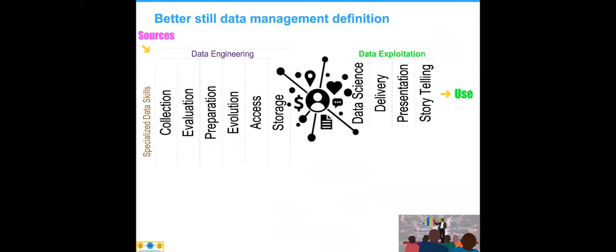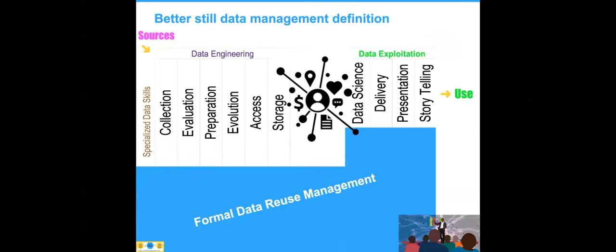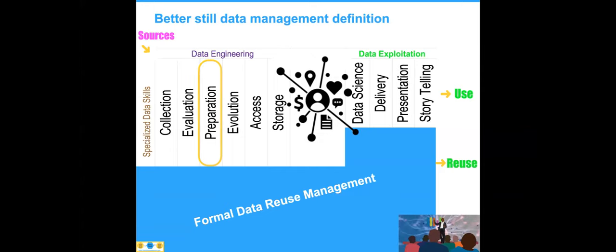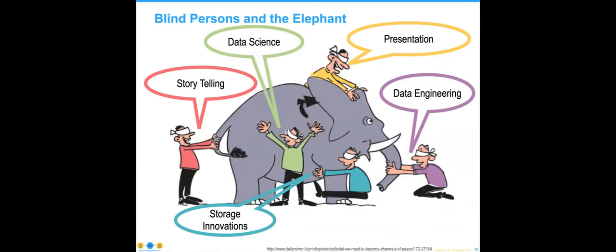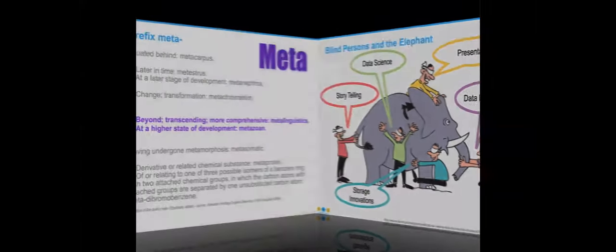We've been working on a different definition: there are things on the sourcing side, typically falling into a data engineering category requiring specialized skills, and things on the exploitation side. None of these still hit on what we're trying to do with data for the most part, which is reuse it. The knowledge graphs area seems to indicate that we can use the metadata about the metadata — meta metadata — to start figuring out access patterns. Our focus here is really on preparation and delivery, and people are looking at data from different perspectives and only seeing part of what's actually going on in the metadata world.